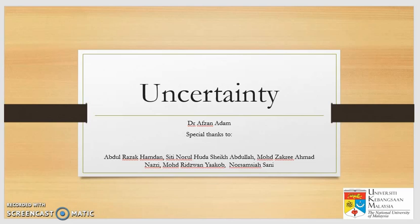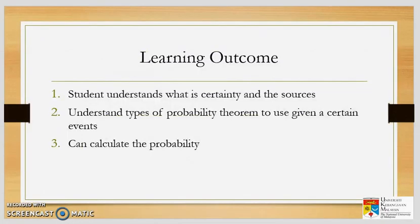The learning outcomes I hope you can understand by the end of this video lecture: students understand what is uncertainty and certainty, including the sources; understand types of probability; the theorem to use given a certain event; and students can calculate the probability.